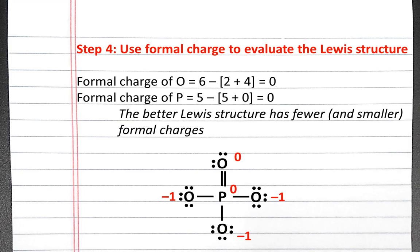Phosphorus is able to accommodate ten electrons instead of eight because it's in the third row of the periodic table or below. This means that those extra electrons are occupying the d orbitals.